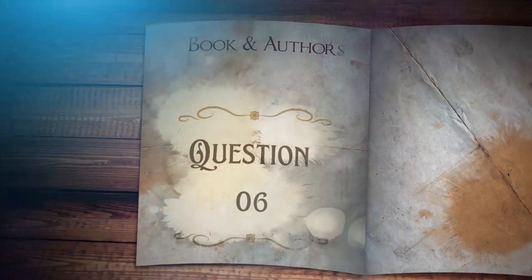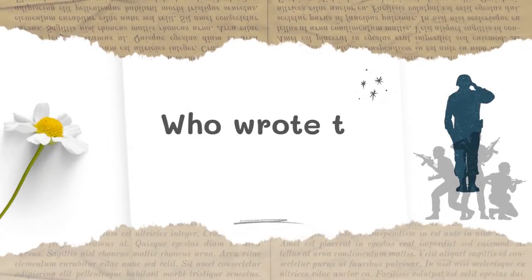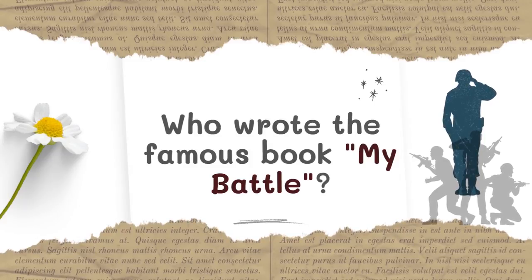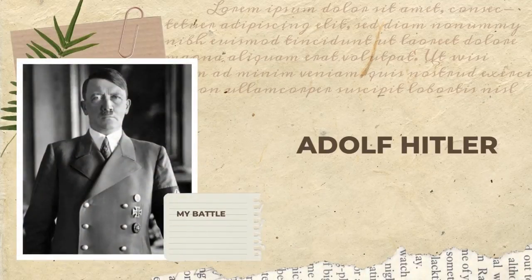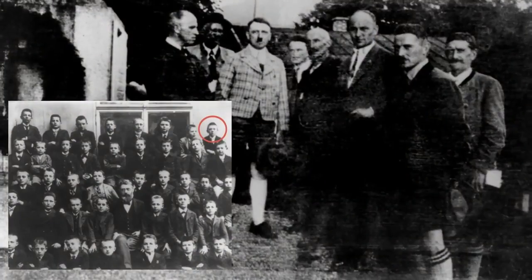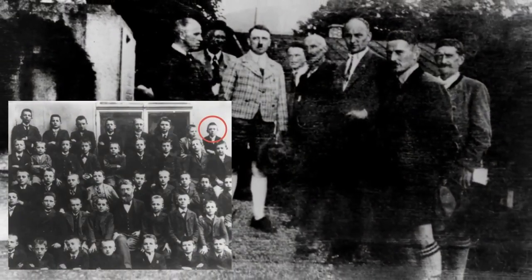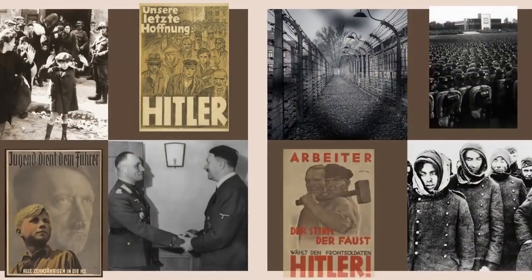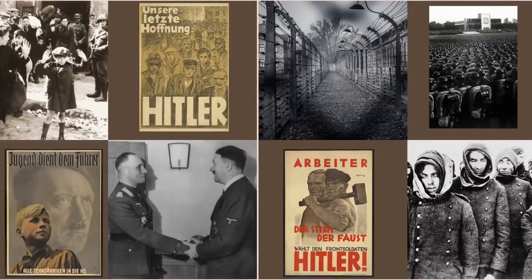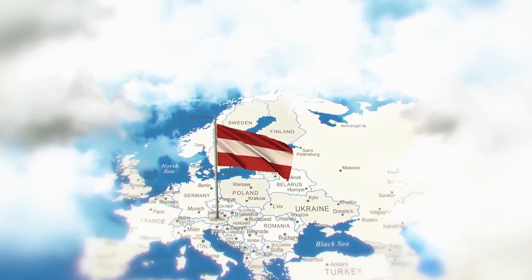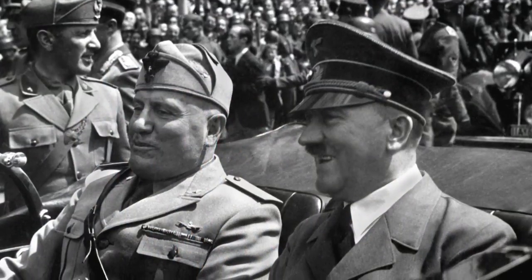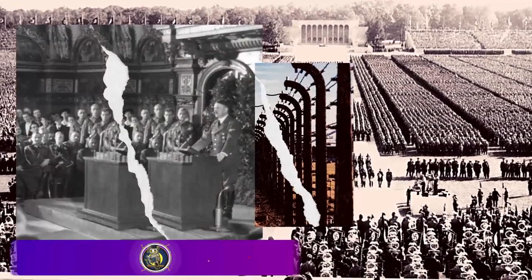Question number six: who wrote the famous book Mein Kampf? The answer is Adolf Hitler. Adolf Hitler was born on April 20, 1889, in Braunau am Inn, a small Austrian town near the Austro-German frontier. After his father Alois retired as a state customs official, young Adolf spent most of his childhood in Linz, the capital of Upper Austria. Adolf Hitler, the leader of Germany's Nazi Party, was one of the most powerful and notorious dictators of the 20th century.